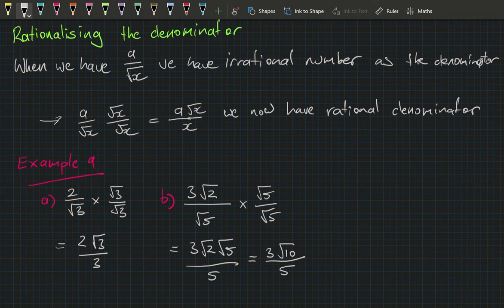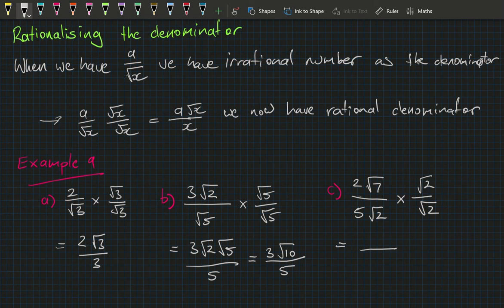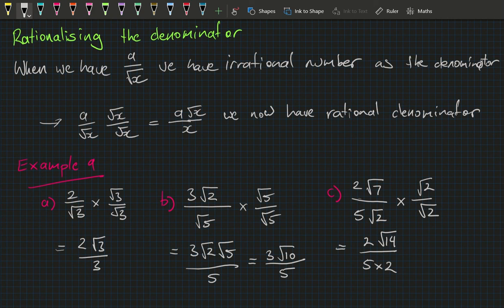Part c: 2 times square root of 7 all over 5 times square root of 2. We focus on rationalizing the square root of 2 in the denominator, so we multiply by square root of 2 over square root of 2. The denominator becomes 5 times 2, and the numerator becomes 2 times square root of 7 times square root of 2, which is 2 root 14. The 2s cancel as common factors, leaving square root of 14 over 5.